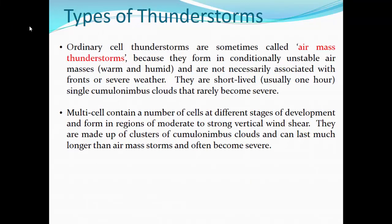Generally, there are two types of thunderstorms: a single cell or a single cumulus cloud, known as an ordinary cell thunderstorm, and then storms that comprise multiple cells or multiple cumulus clouds — multi-cell thunderstorms. An ordinary cell thunderstorm, sometimes called an air mass thunderstorm, forms in those warm, moist air masses that are conditionally unstable. Not necessarily associated with fronts or any type of severe weather. Many of the thunderstorms that pop up during our warm season over the central peninsula are those ordinary cell thunderstorms — typically short-lived, with a single cumulonimbus cloud, and rarely do they become severe.